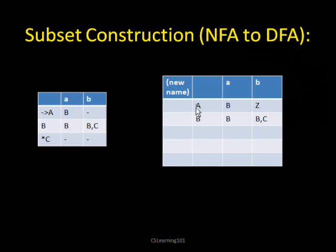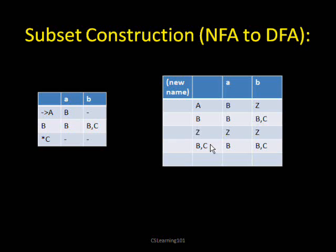When we continue, we only use the states we've discovered so far. We have state A, and we know it goes to state B and Z. So now we have to define state B and also state Z. From state B, we can define where it goes from the NFA table: input A goes to state B again; input B can go to B or C. For a DFA, we can't have it go to both B and C, so that will be its own state. First we're going to define Z — we can just say that it goes to itself, so basically any input that goes to Z won't be accepted.